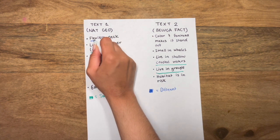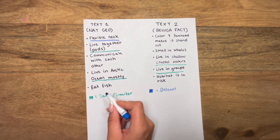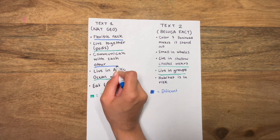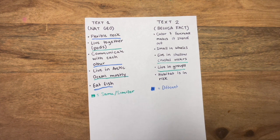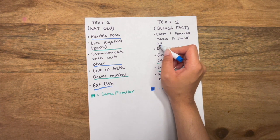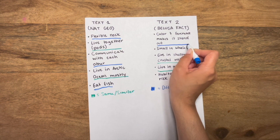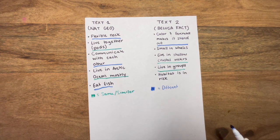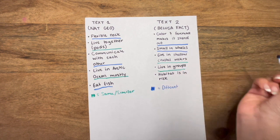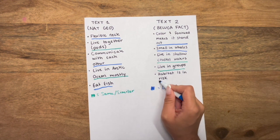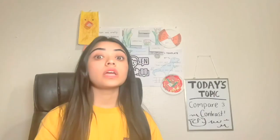For example, the flexible neck of the beluga whale, how they communicate with each other, and what their diet is. In text two, we see that it says that the color and the forehead of the beluga whale makes it stand out. And that it's one of the smaller whale species, as long as the fact that its habitat is in risk. Now that we know the different and similar points of each of the articles, we can go ahead and get our craft started.